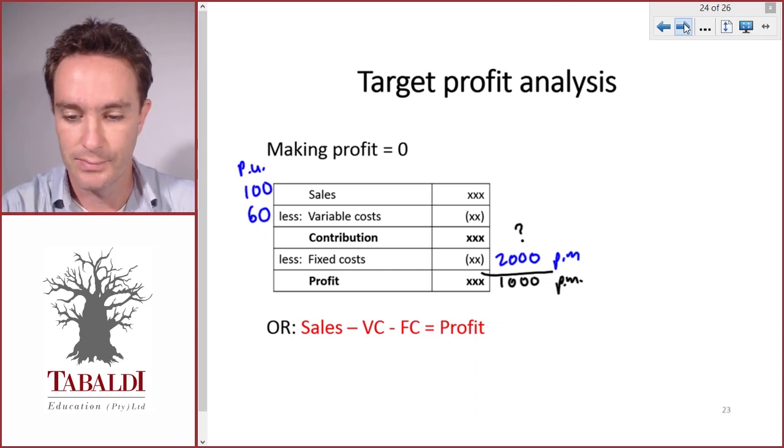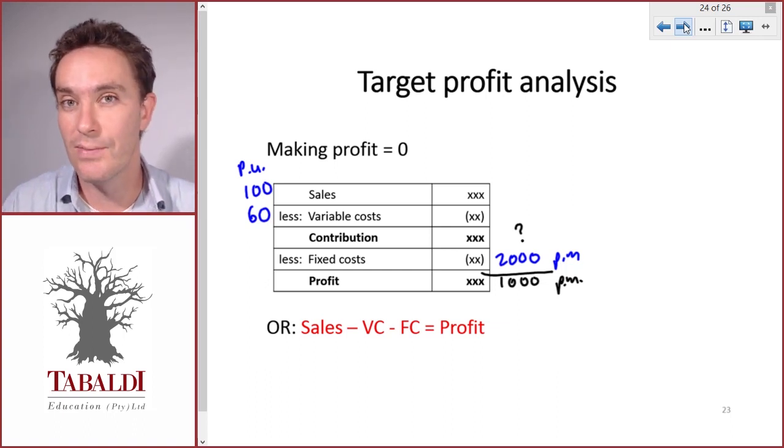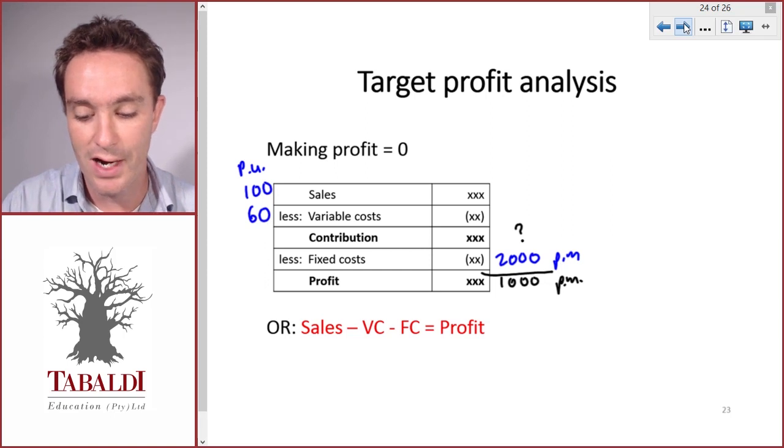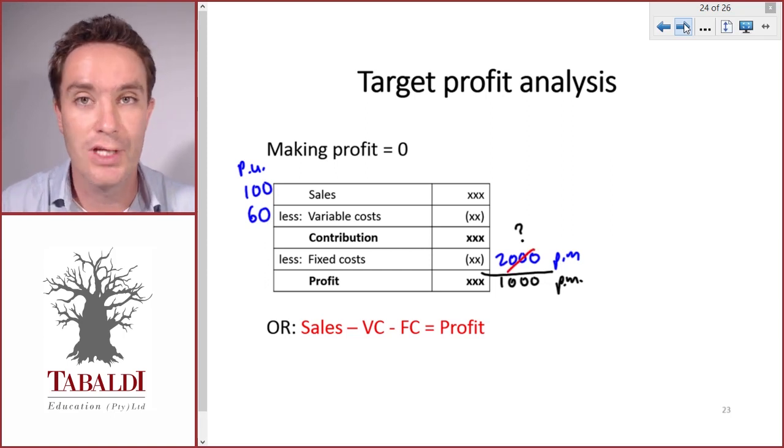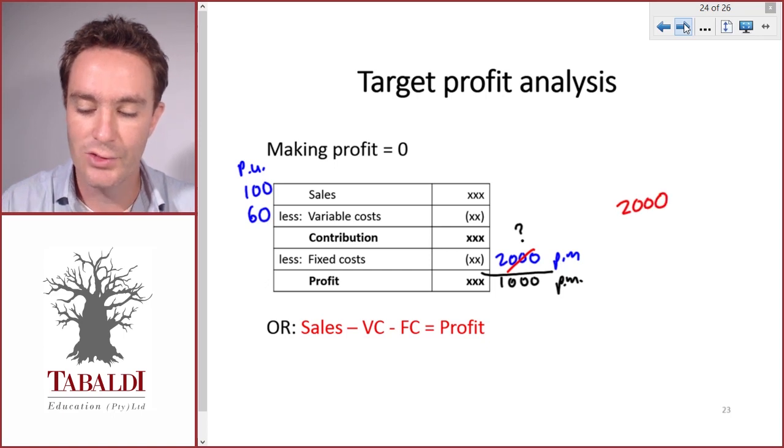Where do we start? We remember from break-even we need to sell a certain number of units in order to cover our fixed costs of $2,000. So we need X amount of units to break even.